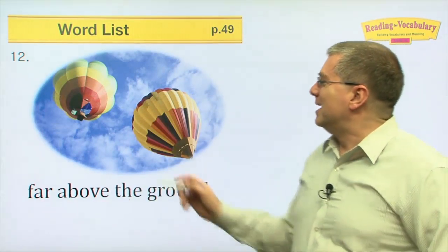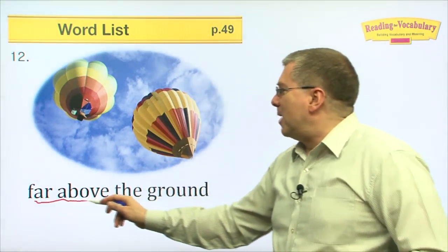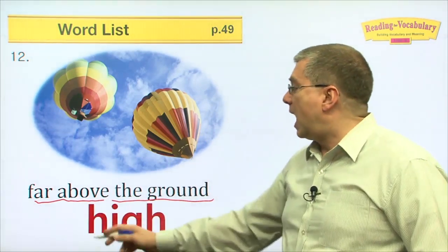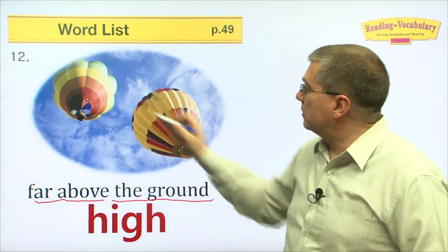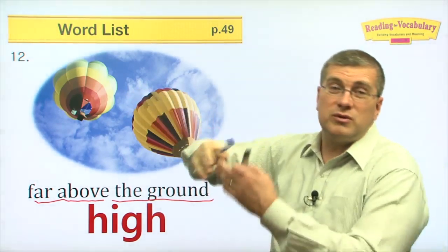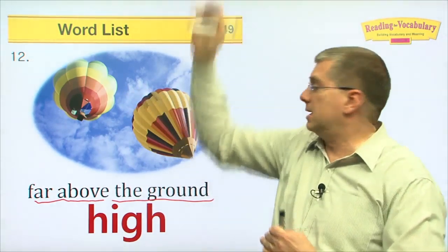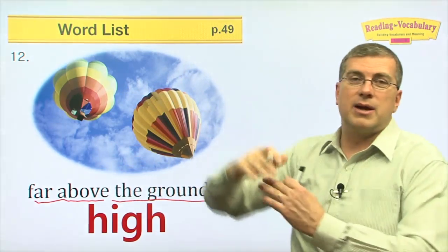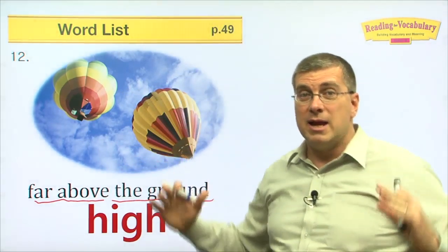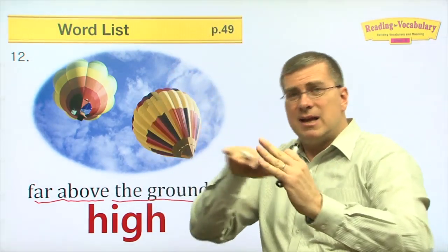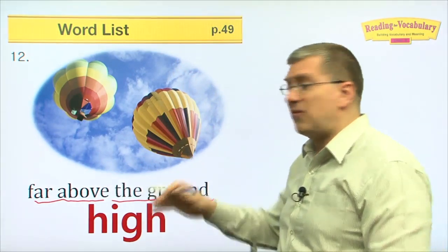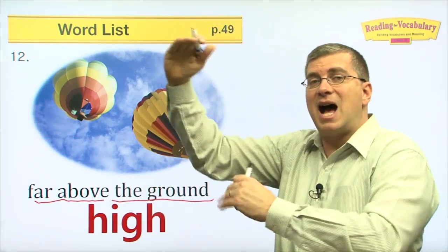Number twelve — far above the ground is high. These balloons are high in the air — they're far above the ground, very high. Like that mountain we talked about before, the mountain is really high. The hills are lower than the mountain. Something that's far above the ground is high.